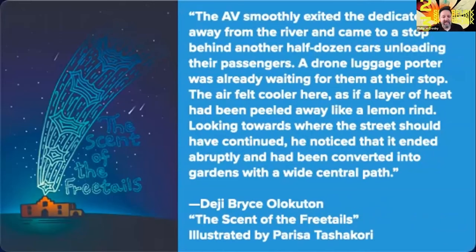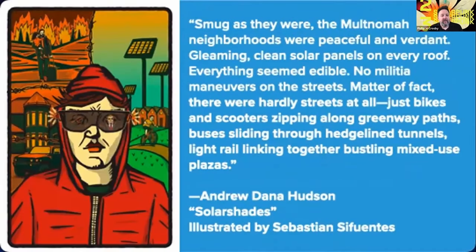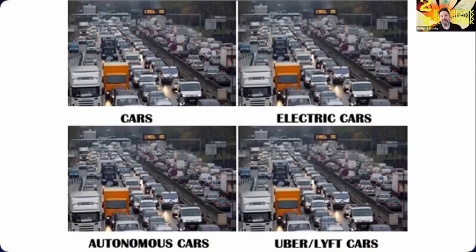Another story from the same collection by Deji Bryce Olukotun is set in what he calls an energy-sovereign community in San Antonio, Texas, the entrance to which is described: "The air felt cooler here, as if a layer of heat had been pulled away like a lemon rind. Looking towards where the street should have continued, he noticed that it ended abruptly and had been converted into gardens with a wide central path." A third story from the same collection by Andrew Dana Hudson describes its Portland setting: "There were hardly streets at all, just bikes and scooters zipping along greenway paths, buses sliding through hedge-lined tunnels, light rail linking together bustling mixed-use plazas."